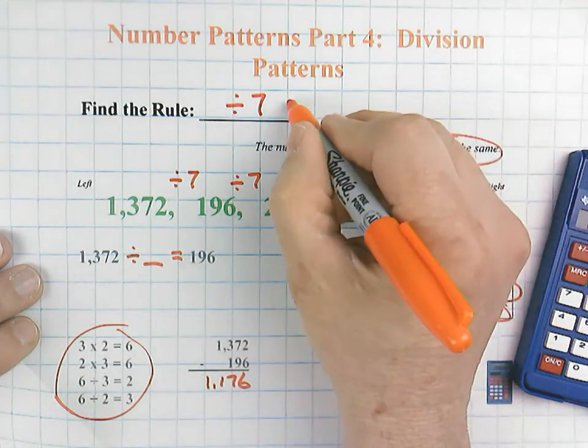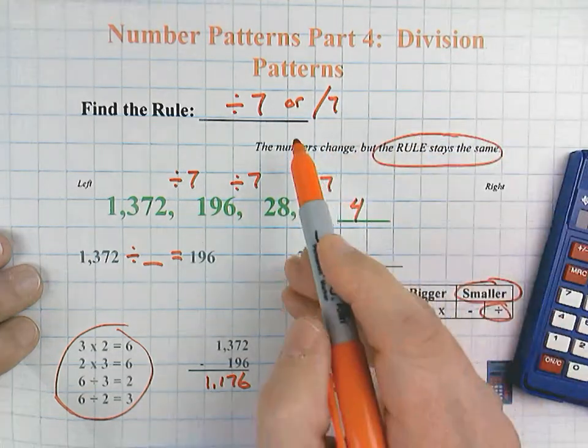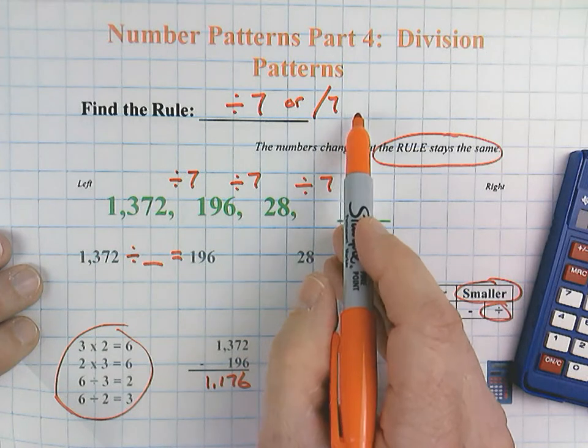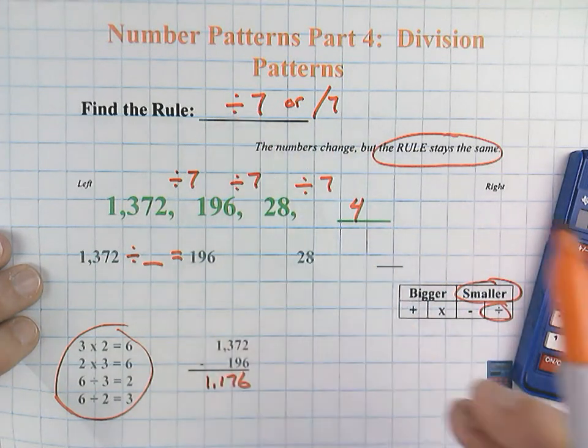So our rule for this first problem would be a division dividing by seven. Depending what grade you are, it could also be expressed as divide by seven. Usually when you get to fifth, sixth, older grades, many times in the third and fourth grade, it'll be shown in that way.